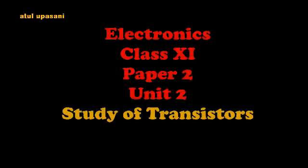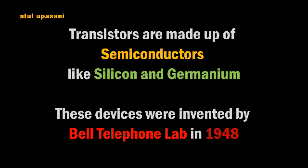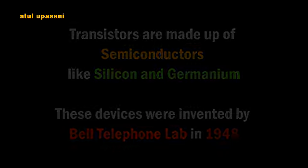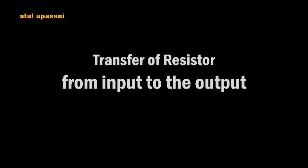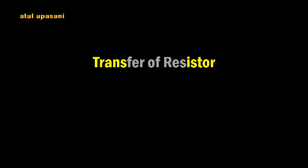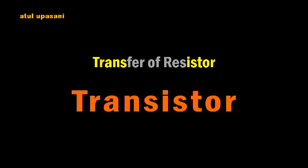Hello dear students. This is paper second for class 11th and the name of the paper is semiconductor devices, in which the second chapter deals with the study of transistors. The transistor is a solid state device and it is made up of silicon or germanium. The transistor's name is derived from the transfer of resistance, so from the words 'trans' and 'resistor' it is combinedly known as transistor.